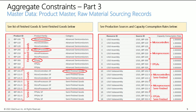See product master details on the left. You can see the product family and category values for all the finished goods and semi-finished goods. You can also review capacity consumption rates on the right. Note that finished goods have different capacity consumption rates across different product families. For example, microcontroller products require one unit of capacity per product from the assembly line, microprocessor products require two units, while FPGA products require three units.